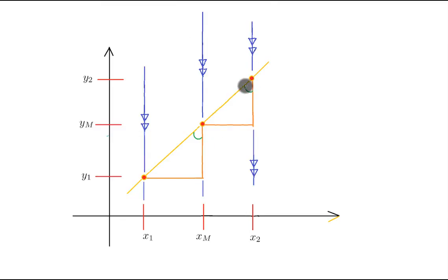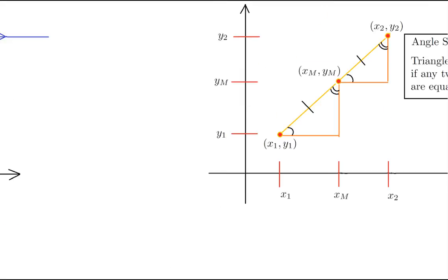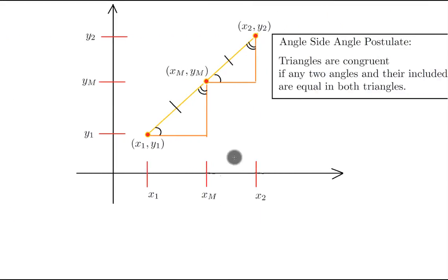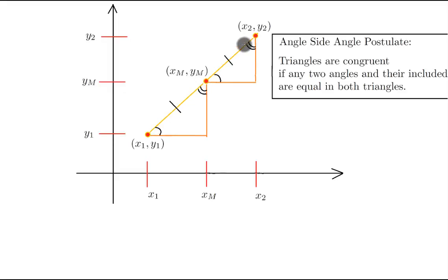Now if we draw in the 90-degree direction, we have these three parallel lines, which means that these angles are also congruent by the postulate. So by the angle-side-angle postulate, these two triangles are congruent, because by definition the midpoint cuts the segment into two equal halves. So this side is congruent to this side, this angle is congruent to this angle, and this angle is congruent to this other angle.